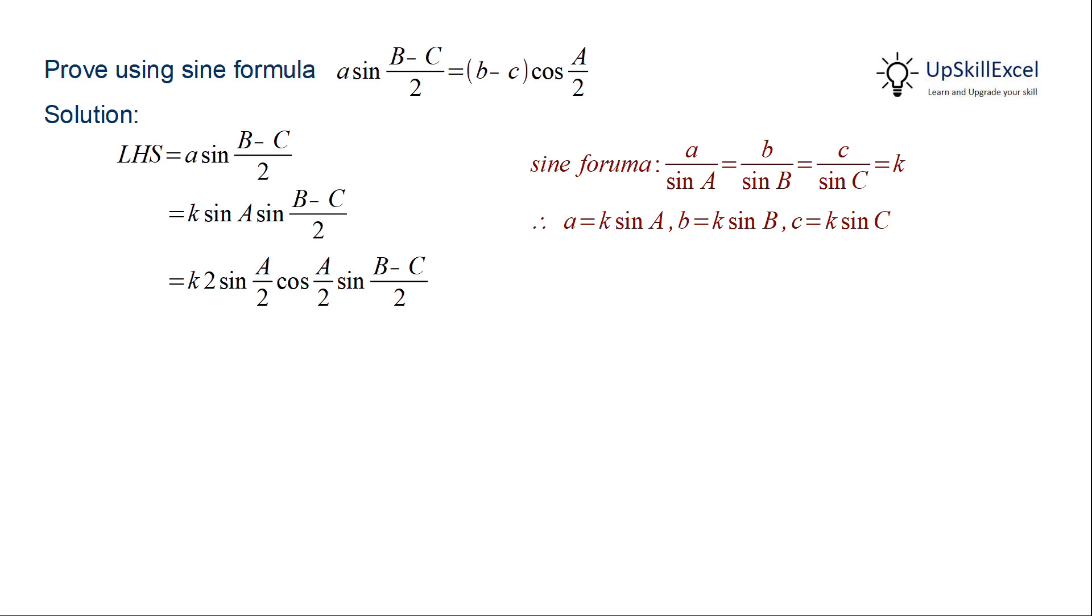Within a triangle, we know that A + B + C = π. From there, we get that sin(A/2) = cos((B+C)/2).